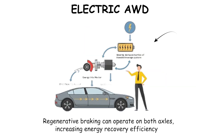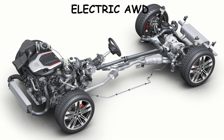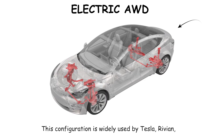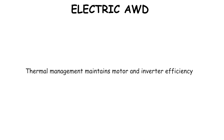Regenerative braking can operate on both axles, increasing energy recovery efficiency. The drivetrain layout eliminates driveshaft losses and allows axle decoupling at low loads to reduce consumption. Dual-motor systems increase mass, cost, and energy draw, reducing range per kilowatt-hour compared with single-motor layouts. This configuration is widely used by Tesla, Rivian, and performance-focused electric vehicles. Thermal management maintains motor and inverter efficiency.